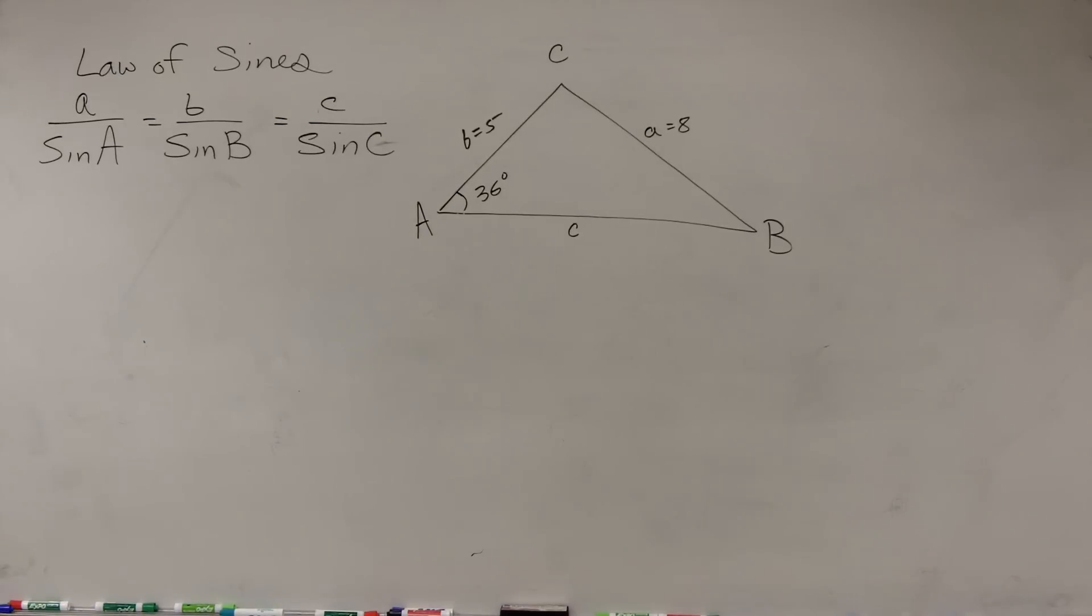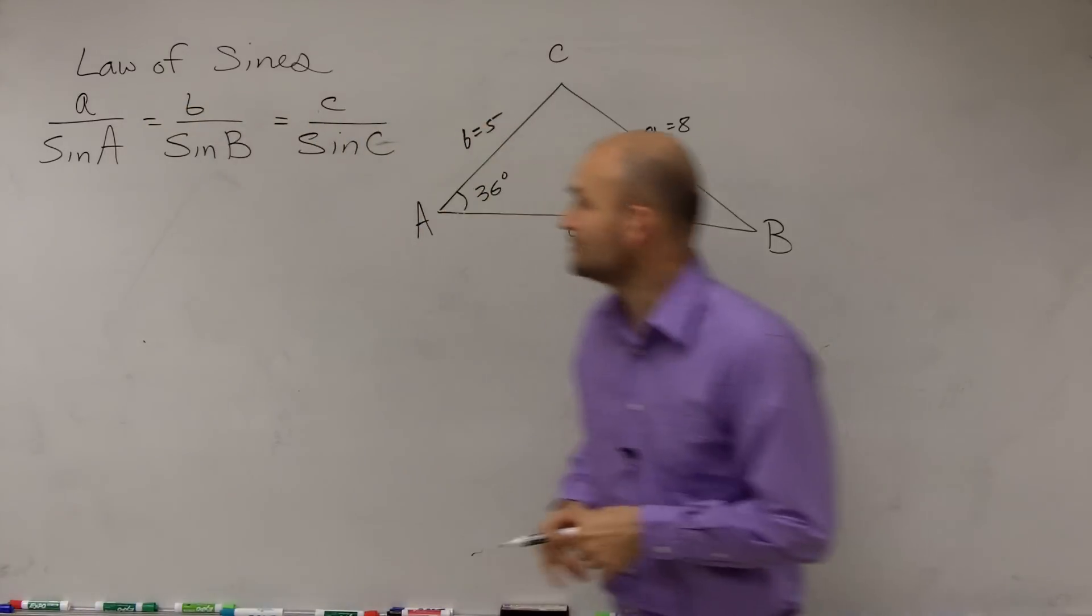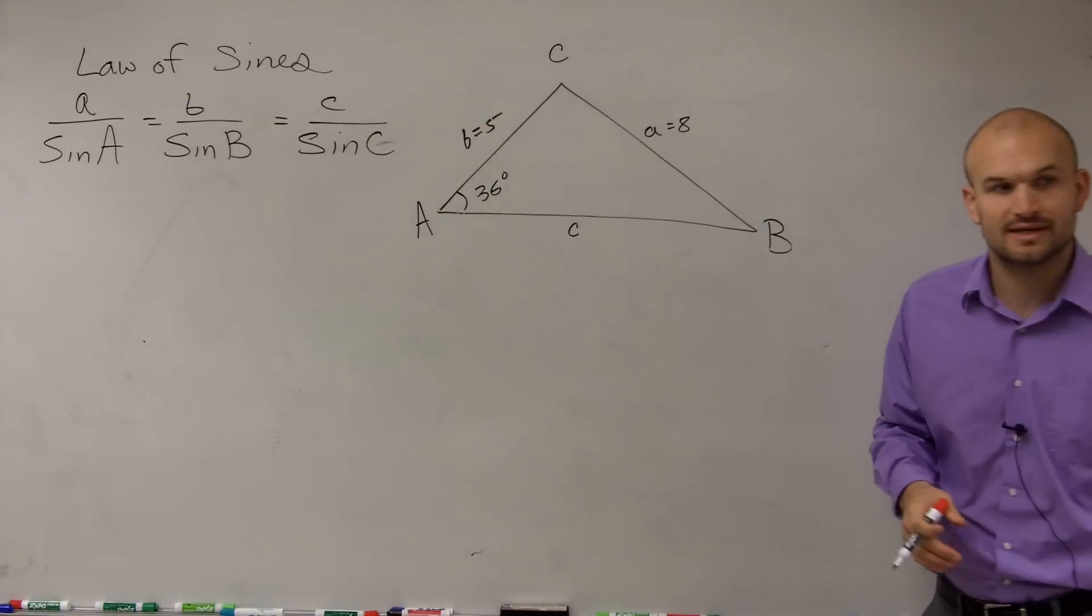Alright. So we have the Law of Sines: A over sine of A equals B over sine of B equals C over sine of C.